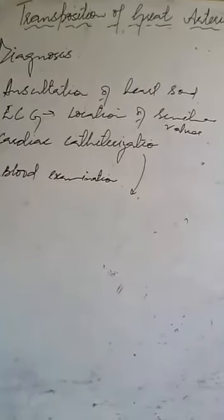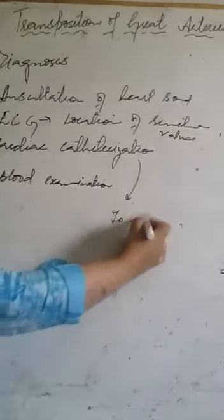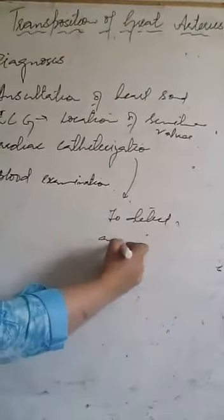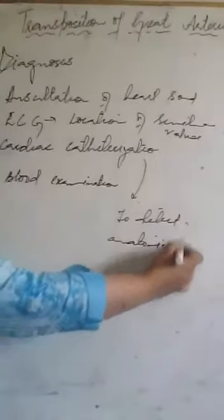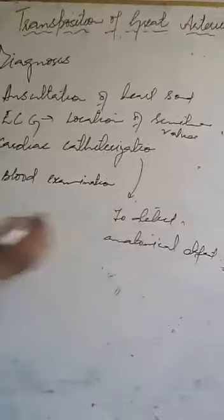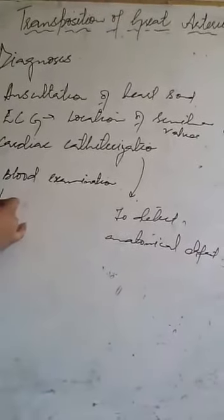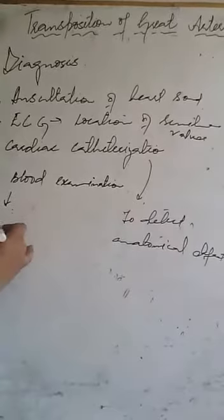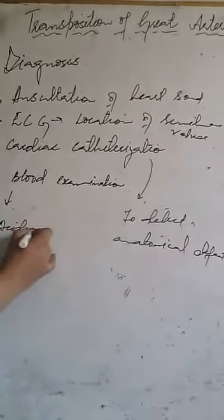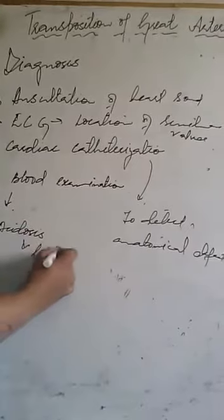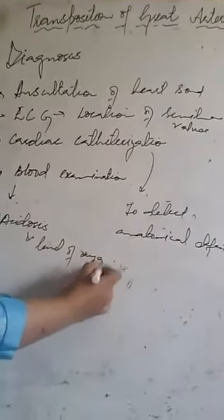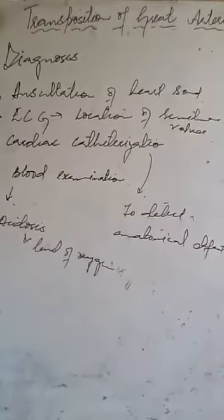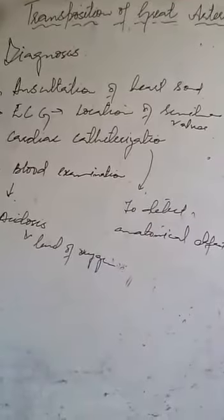Cardiac catheterization is also done to detect the anatomical defect in TGA. By blood examination, we can detect acidosis and the level of oxygen. Additional diagnostic tools include angiocardiography, by which the disease is confirmed.